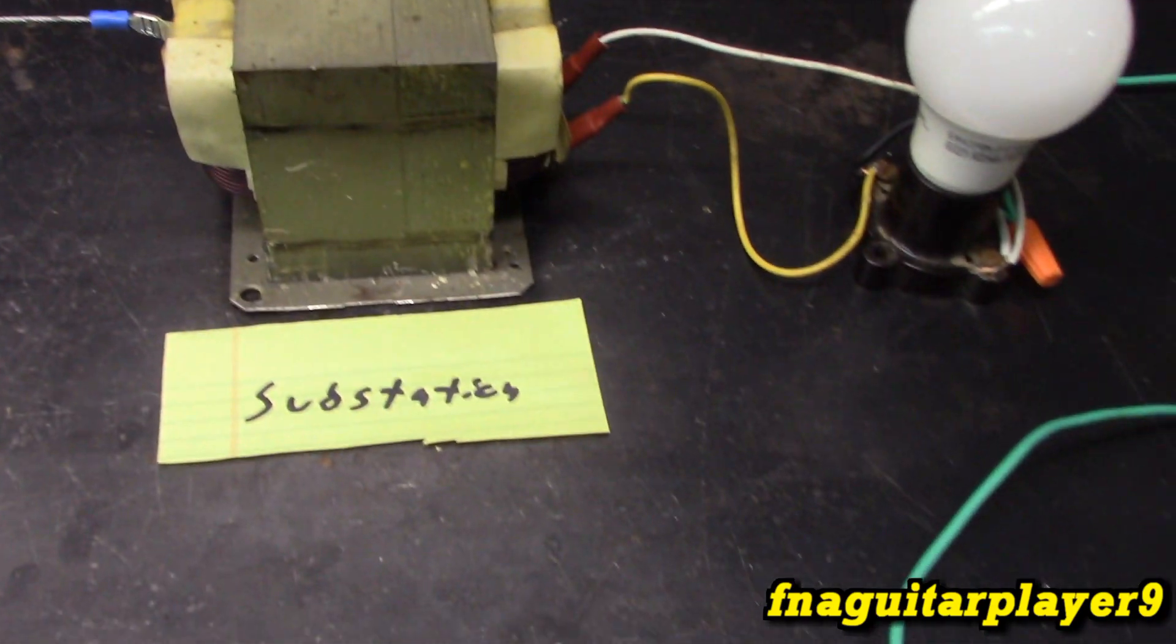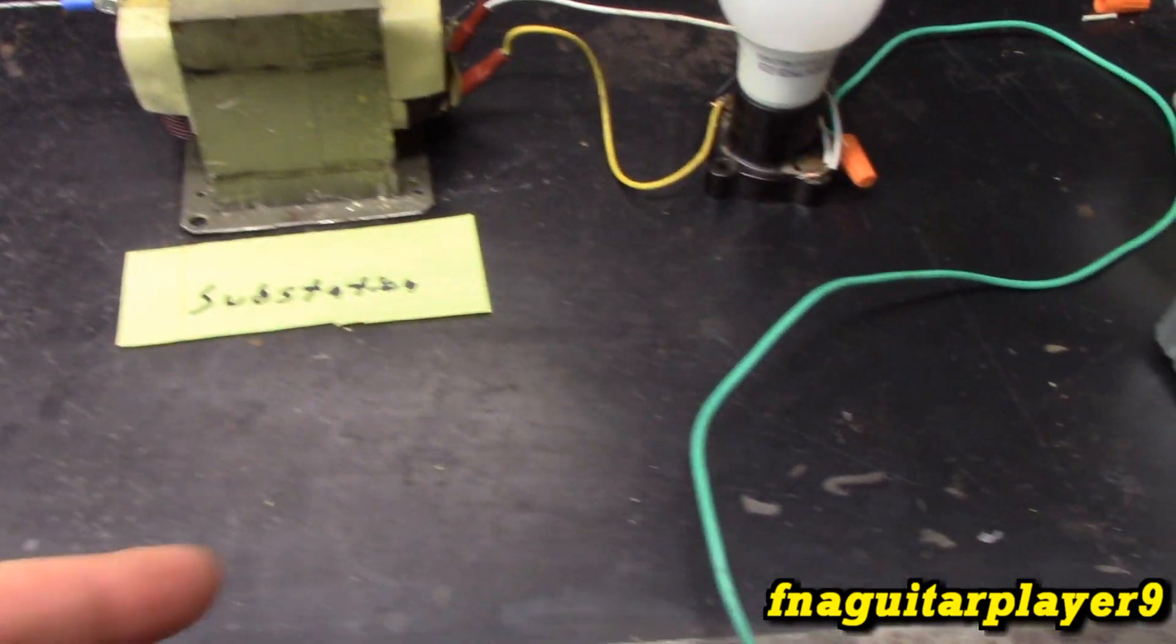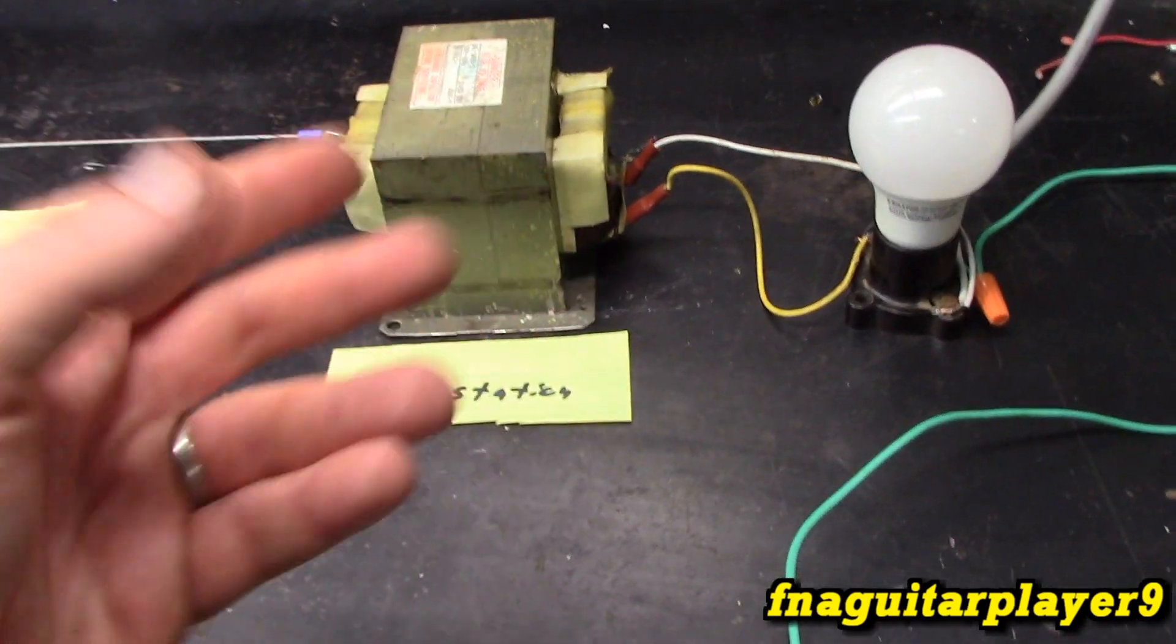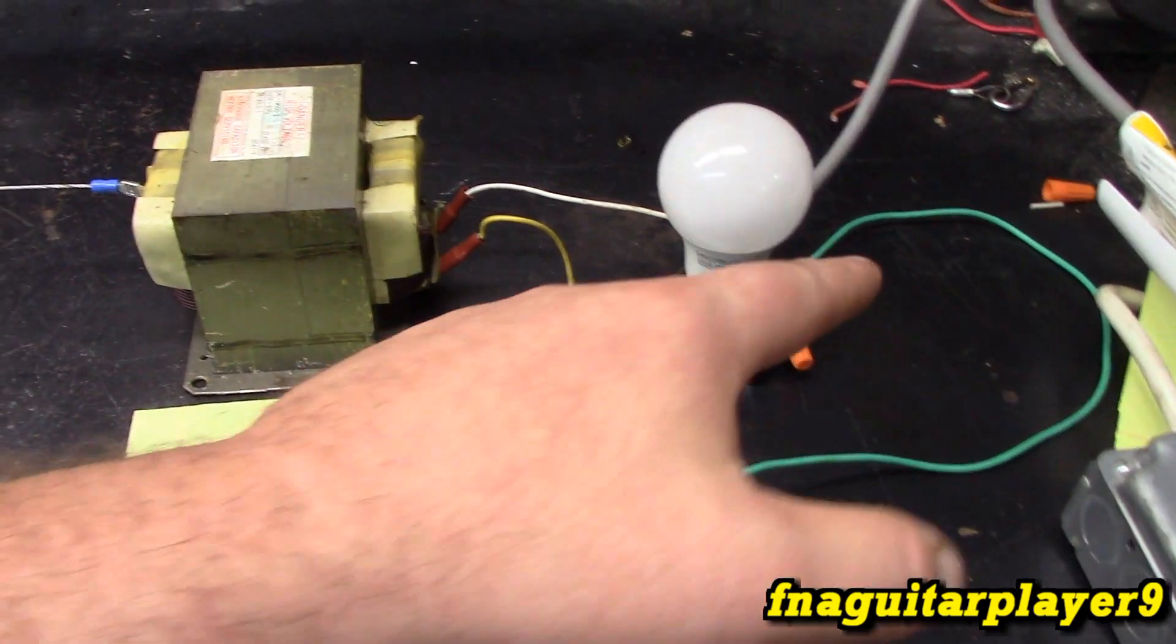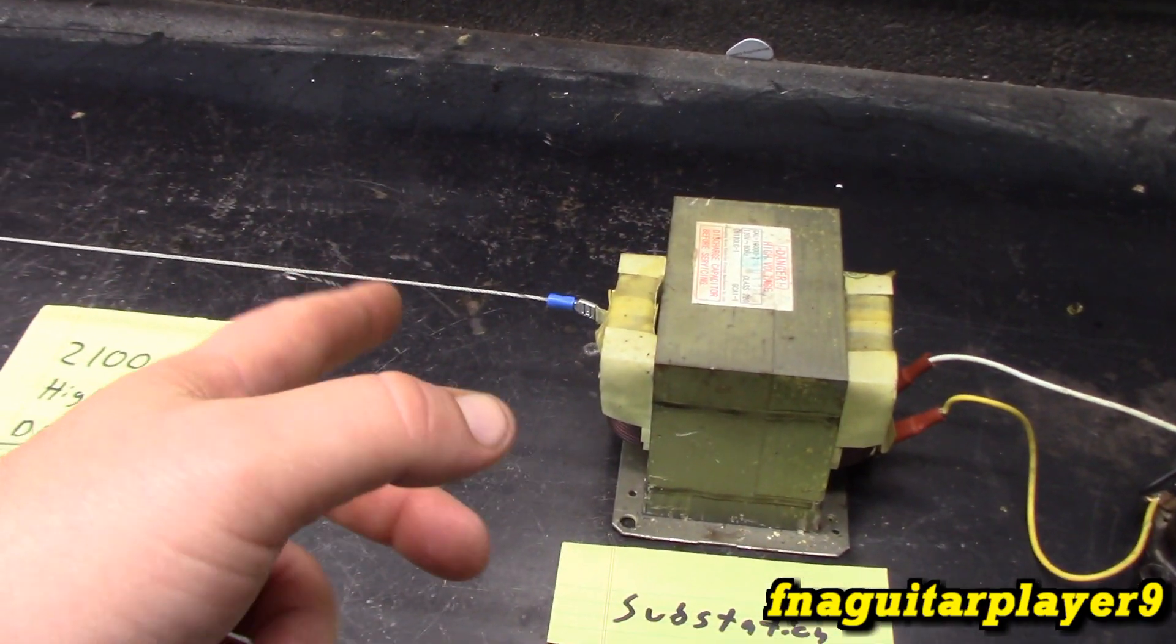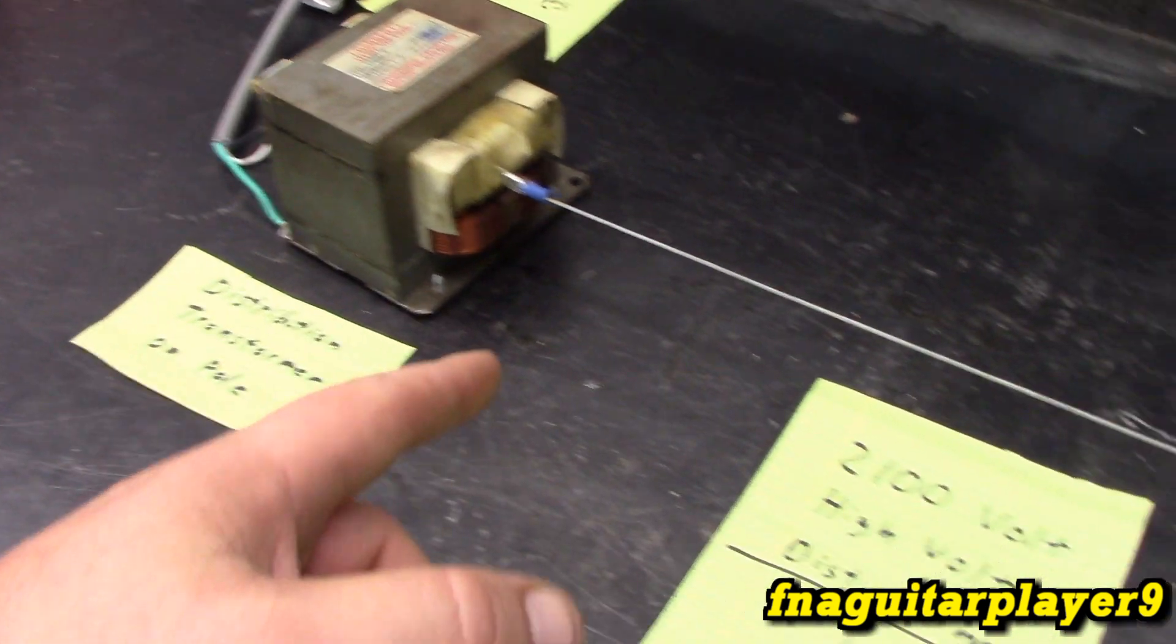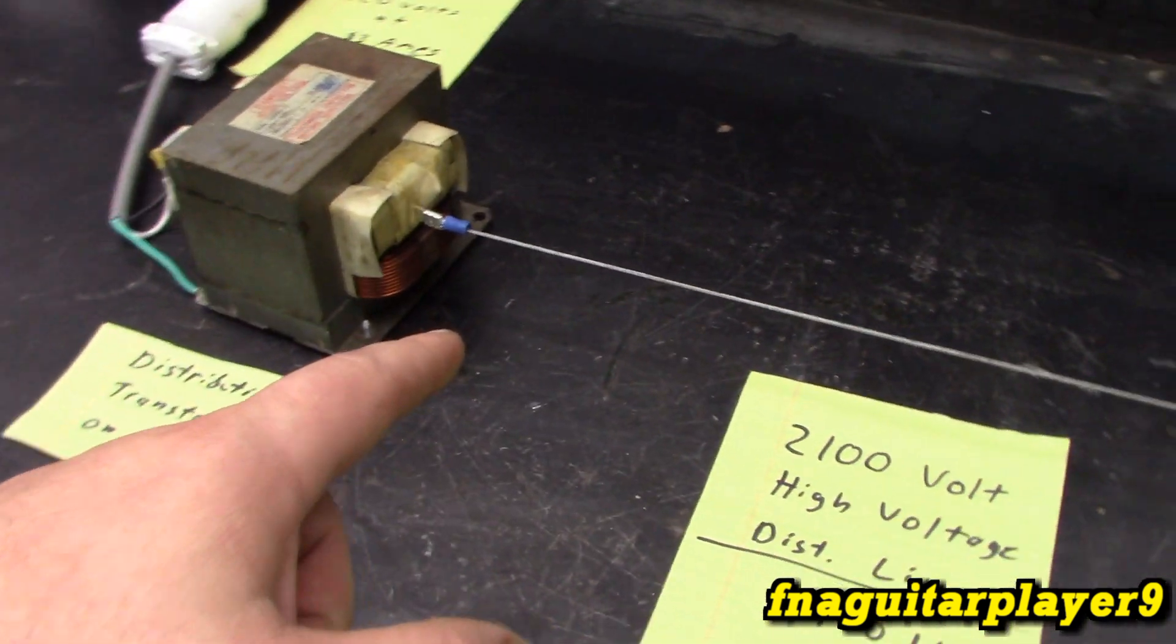So this represents a basic substation, which a substation is pretty much taking, this is just rough numbers, I don't know what the exact voltages are. But let's say 150,000 volts would be coming in, and it would drop it down to say 15,000 to 30,000 volts and distribute it.